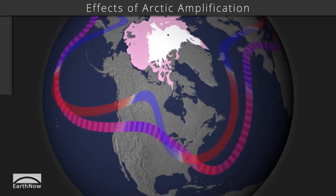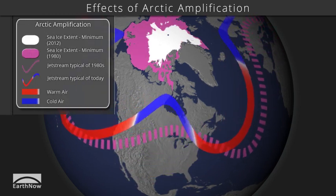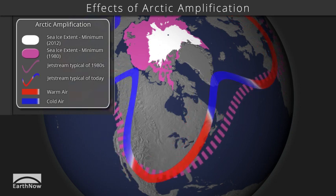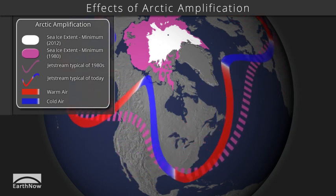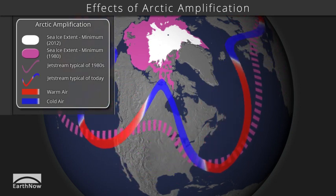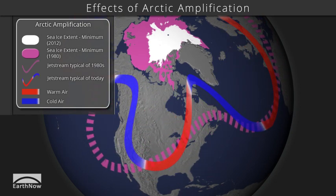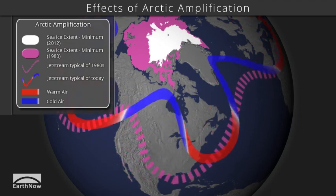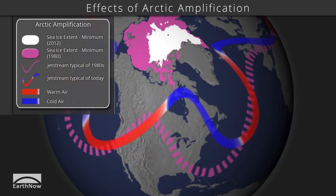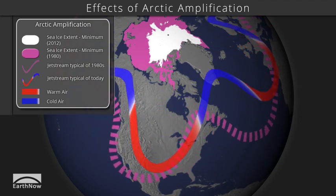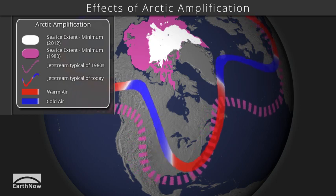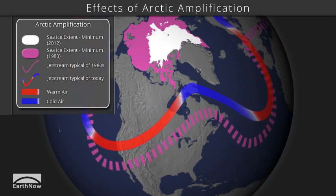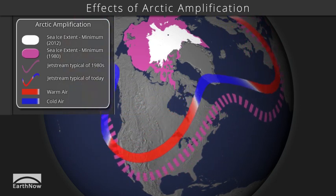Now the display shows the recent Arctic sea ice from September 2012, the lowest ice extent ever recorded by satellites. The current typical jet stream location is now shown, with the previous ice extent and jet stream location typical of 30 years ago shown in pink for comparison.